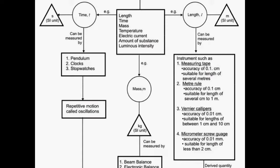4. Micrometer screw gauge - accuracy of 0.1 mm, suitable for lengths less than 2 cm.